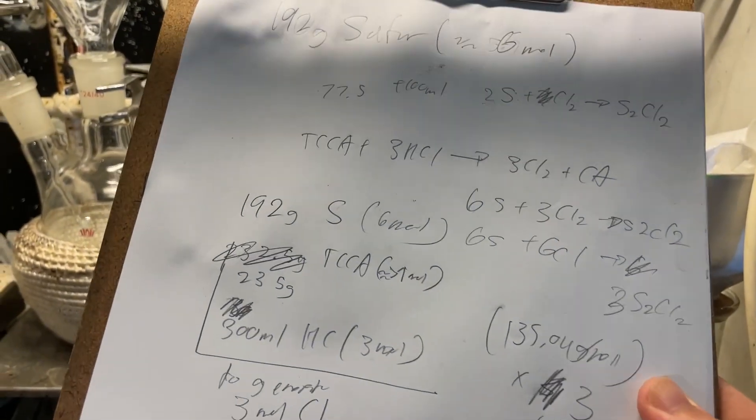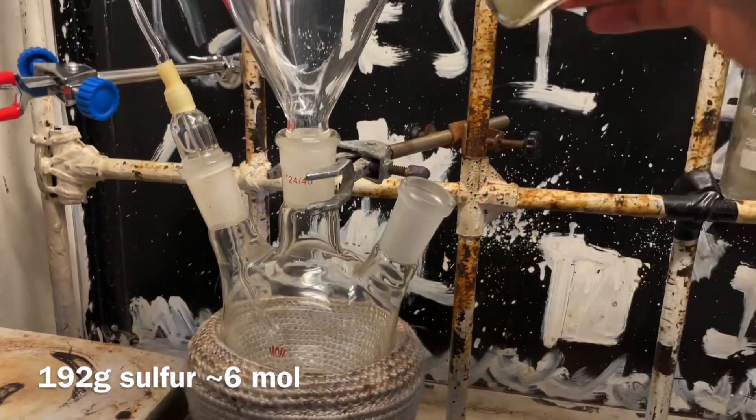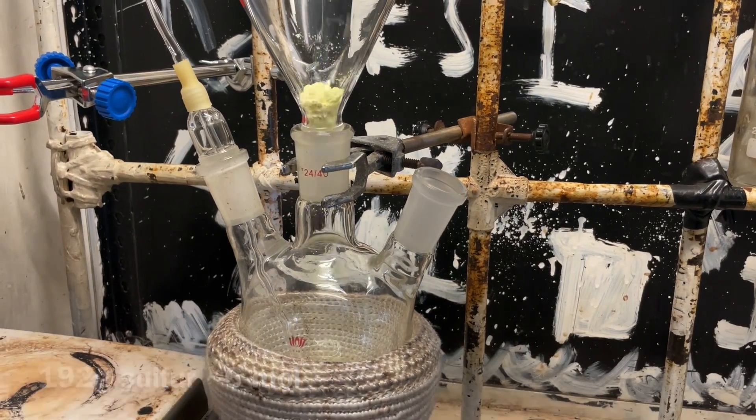Welcome back everyone, and today we'll be making sulfur chloride. Here's my stoichiometry if you want to look at it. We're going to add 192 grams of sulfur into a 500 milliliter three-neck flask with a gas inlet tube on the side.